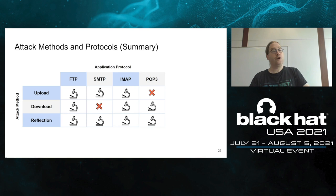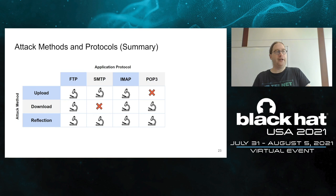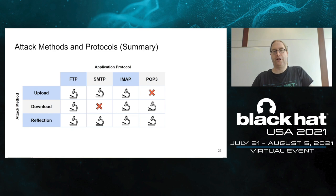In summary, we considered upload, download, and reflection attacks across FTP, SMTP, IMAP, and POP3. POP3 provides no mechanism to upload data, so upload attacks are excluded. SMTP only allows email submission and not inbox download, so download attacks are excluded. All other combinations were considered, and in many cases we found practical attacks.